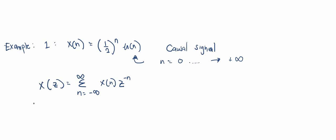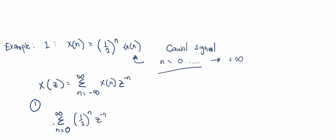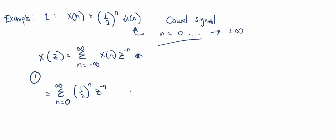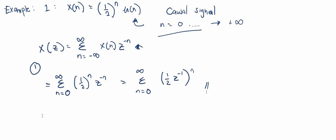Let's go ahead and apply this formula. For Step 1, since our signal is causal, the summation runs from n equals zero to infinity. By applying the law of exponents, we arrive at a much simpler form.